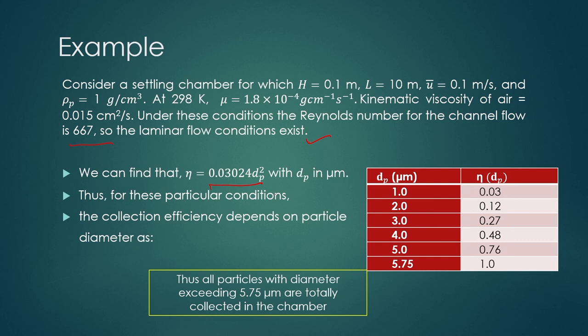For dp in micrometers, the collection efficiency changes with particle diameter. If you substitute different values of particle size, you get different efficiencies. As particle size increases, the efficiency of the settling chamber increases. The settling chamber gives better efficiency for higher particle sizes.